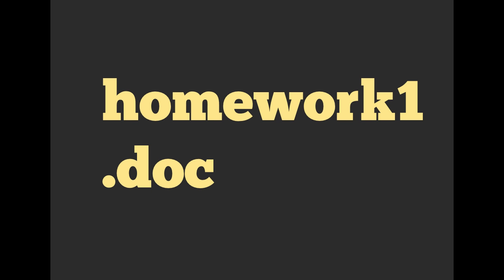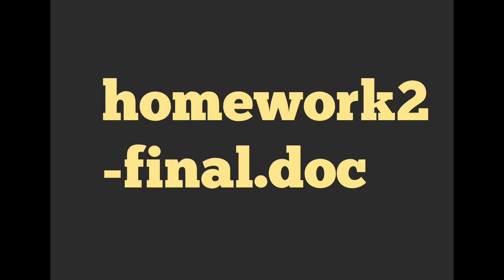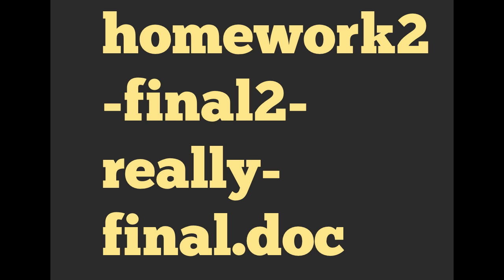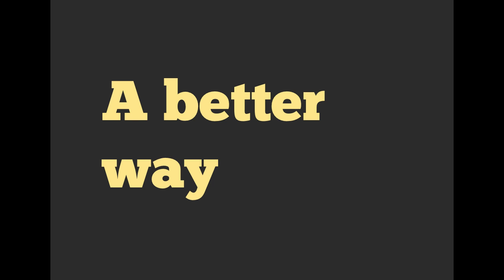So you make a new document — homework1.doc — and then you're going along for a while and you make some more changes and decide you really want to change the entire theme of the paper. So you save that and open up homework2.doc. You keep on going with this pattern and eventually you've got homework2.final, then homework2.final2, then homework2.final2.really_final.doc. Well, there is a better way — we can use version control.